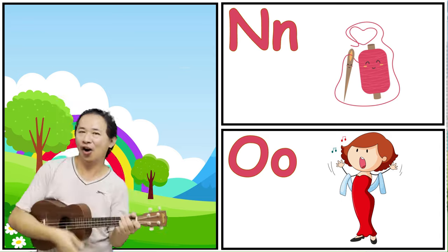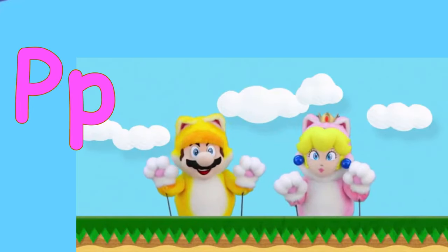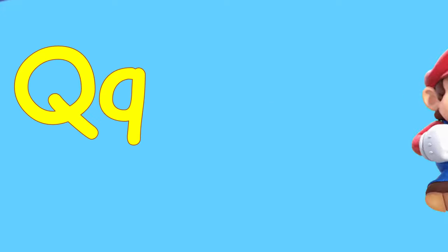O is for Opera. P is for Puppet. Q is for Quick.